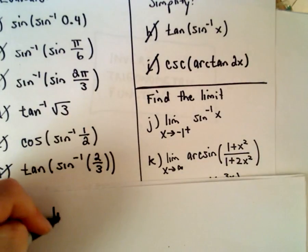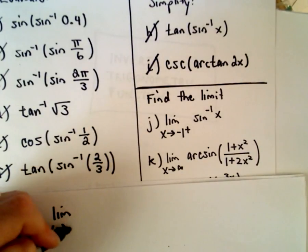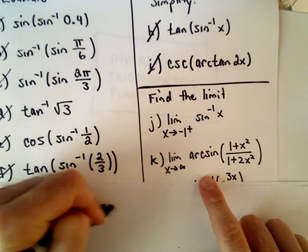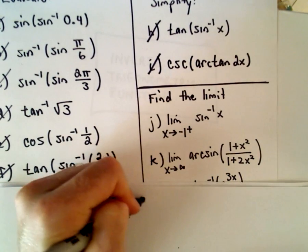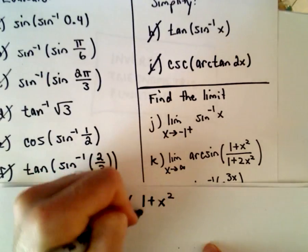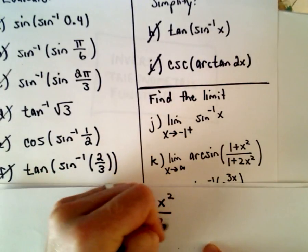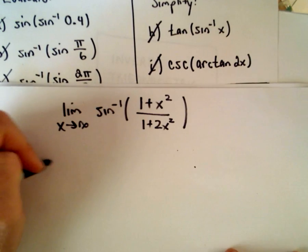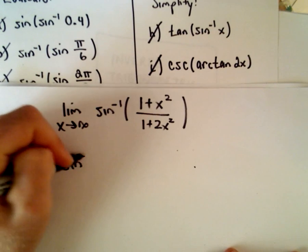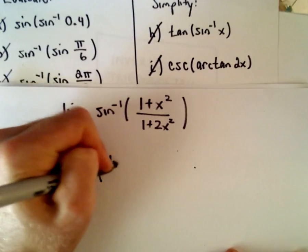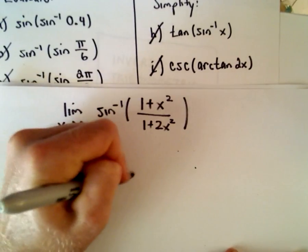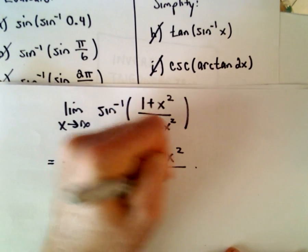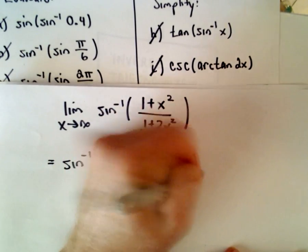We've got the limit as x goes to infinity of arcsine — using inverse notation — of 1 plus x squared over 1 plus 2x squared. In this case we can just pull the limit inside, so we've got the inverse sine of the limit as x goes to infinity of 1 plus x squared over 1 plus 2x squared.